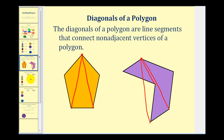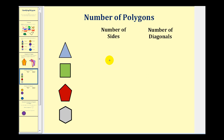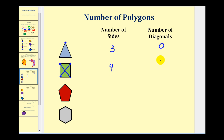Let's compare the number of sides to the number of diagonals across various polygons. For a triangle with three sides, if we select a vertex the remaining vertices are both adjacent, so there are zero diagonals. For a square, selecting a vertex there is only one non-adjacent vertex, giving one diagonal from that vertex and another from the opposite vertex — so four sides yields two diagonals.